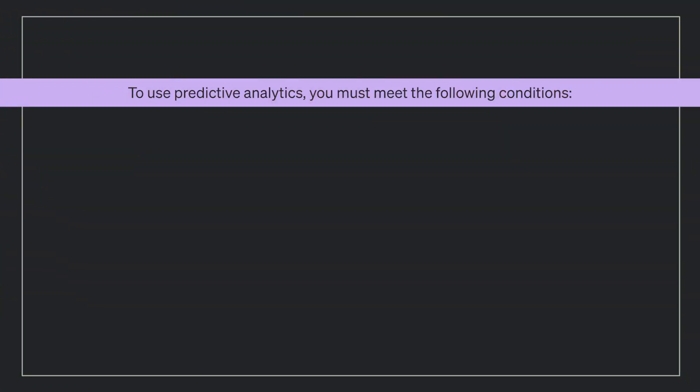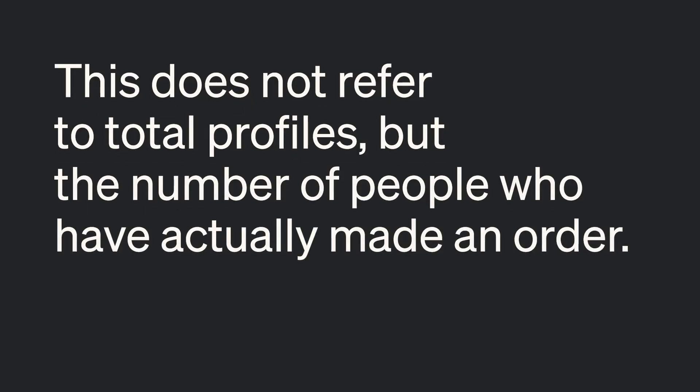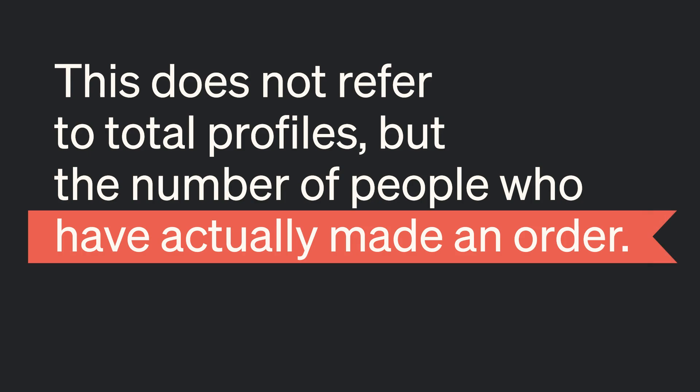It's important to note that you will only see the predictive analytics section on profiles if you meet the following conditions. First, if at least 500 customers have placed an order. This does not refer to total profiles, but rather the number of people who have actually made an order with your business. If this section is on a profile but it's blank, this means we don't have enough data on that individual to make a prediction.